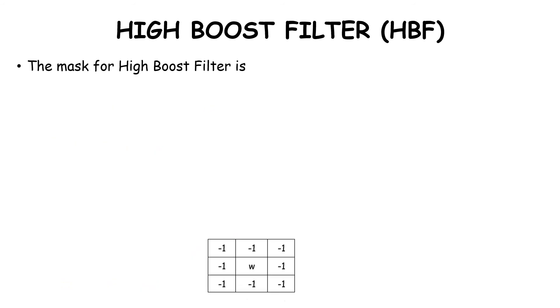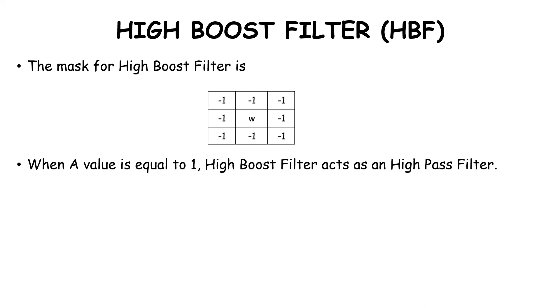The mask for the high boost filter has all surrounding values as -1 and the center is W. When A = 1, the high boost filter acts as a high pass filter. As A increases, the background details become brighter. When A increases beyond a certain value, the resulting images become unacceptable.